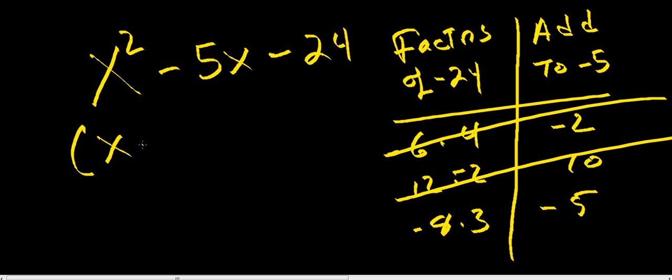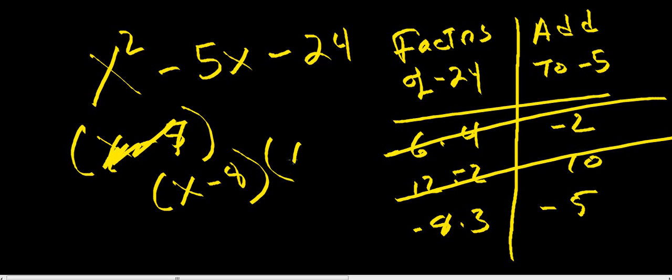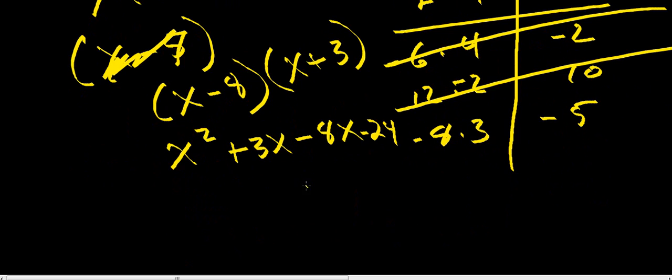So we've got (x - 8)(x + 3). Let's multiply it out just to make sure. You've got x² + 3x - 8x - 24, which gives us x² - 5x - 24. So we got it right.